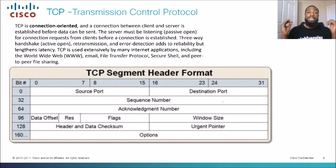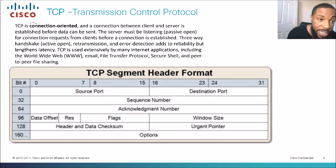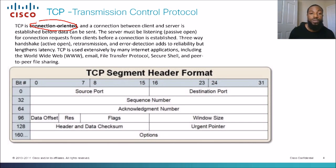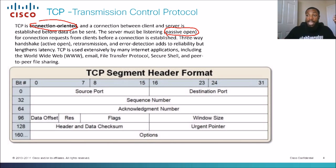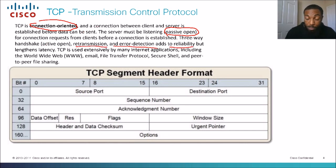TCP stands for Transmission Control Protocol. It is connection-oriented — a connection between client and server is established before data can be sent. So before we send data, we need to establish a connection. The server must be listening, or in a passive open state, waiting for connection requests from clients. They need to do what's called a three-way handshake, which I'll talk further into in the next slides.